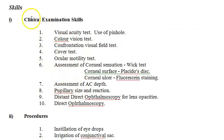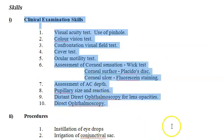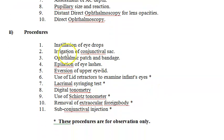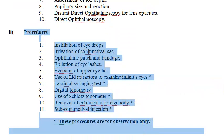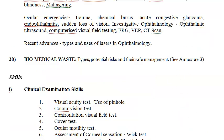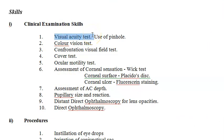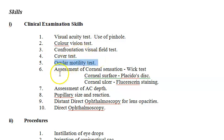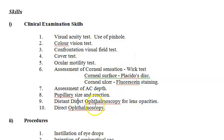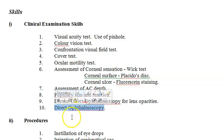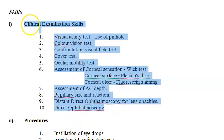Practically, you should know about some clinical skills. Some procedures are only for observation at the MBBS level. What you should practically be able to do: visual acuity testing — checking near vision, far vision, and color vision — visual field test, cover test, ocular motility test, assessment of corneal sensation, Wicks test, pupillary size and pupillary reaction — miosis and mydriasis — all this you have already studied in physiology practicals. You should also be able to do direct ophthalmoscopy and distant direct ophthalmoscopy.